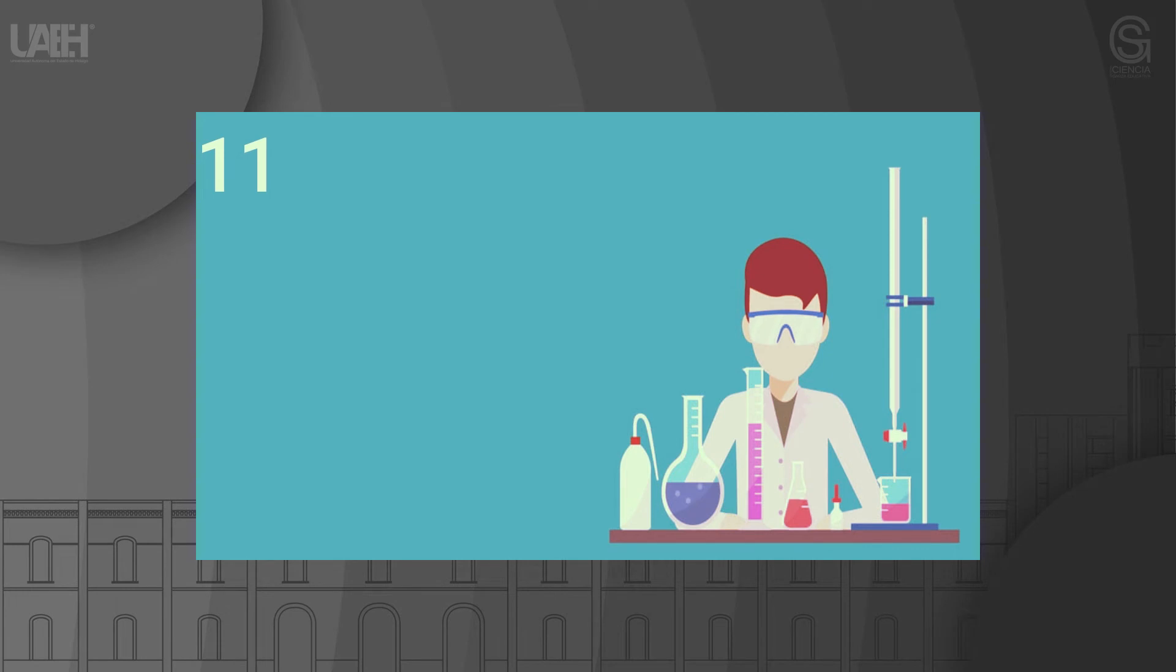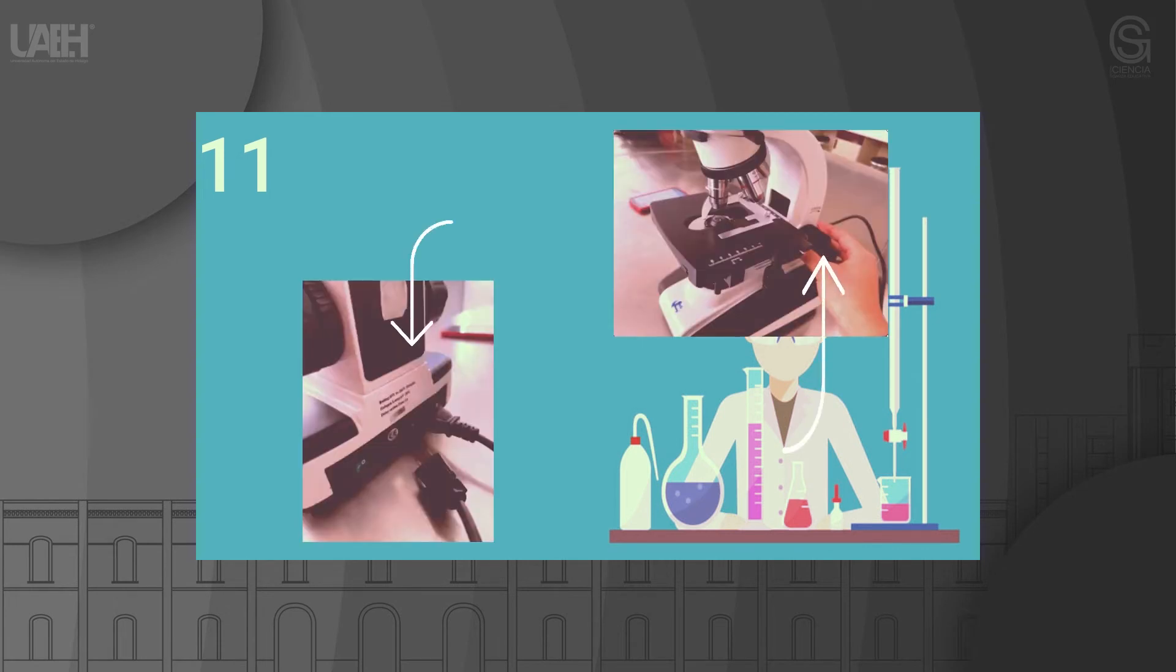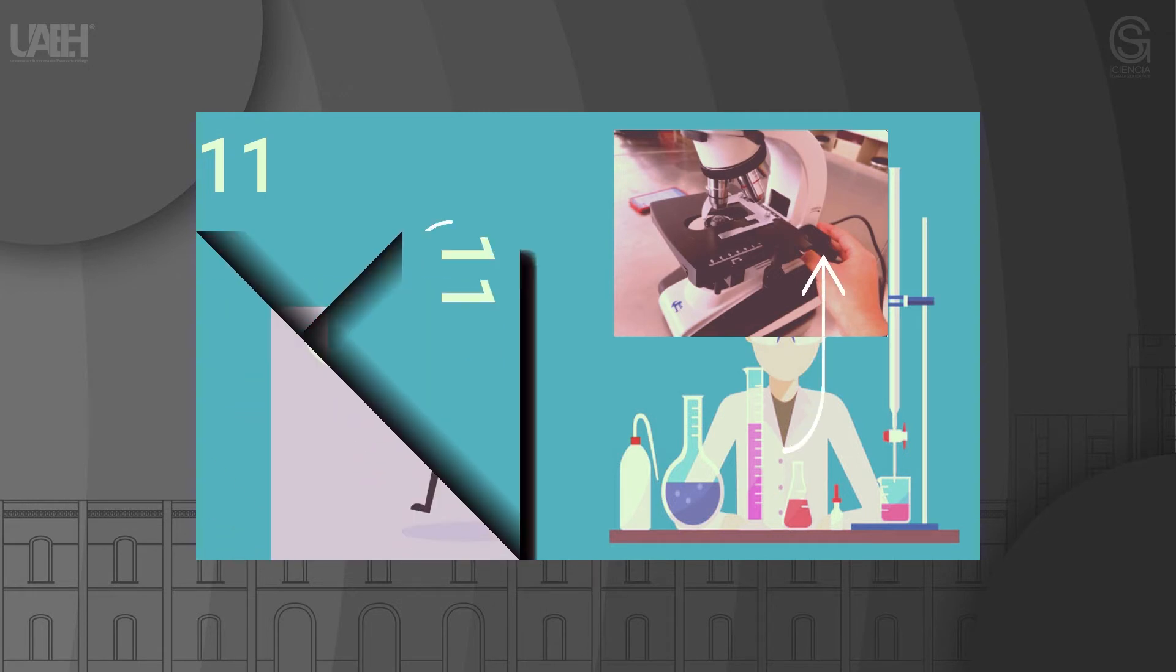Step 11: When the observation is finished, turn off the light and adjust the coarse screw to maximize the distance between the sample and the objective. Then remove the sample and leave the minimum magnification objective selected. If you have finished using the microscope, you can cover it with the cover to prevent dust accumulation.